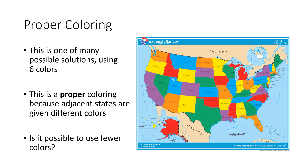Here's a way to do it. We can see that whenever two states share a border, those two states are given different colors. And even though there are 50 states, we don't need 50 colors. In this case we're using six colors: orange, red, yellow, blue, purple, and green. It's a proper coloring because adjacent states are given different colors.